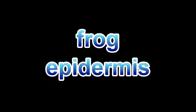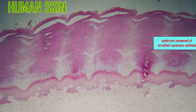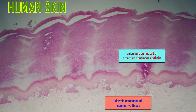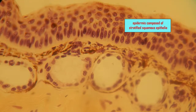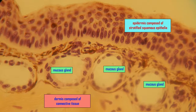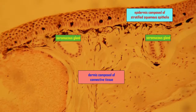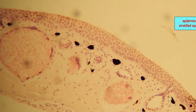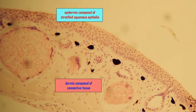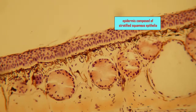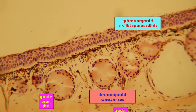The human integument consists of an epidermis composed of epithelia, a deeper dermis composed of connective tissue, and a variety of accessory structures, such as a variety of glands of epithelial origin. Some of these features evolved early in the history of vertebrates, as is evident in these microscopic images of frog skin, which also is composed of an epidermis composed of epithelia, a deeper dermis composed of connective tissue, and is associated with a variety of glands of epithelial origin.